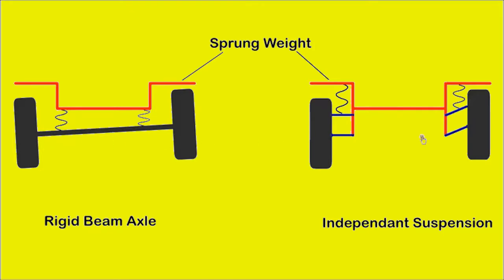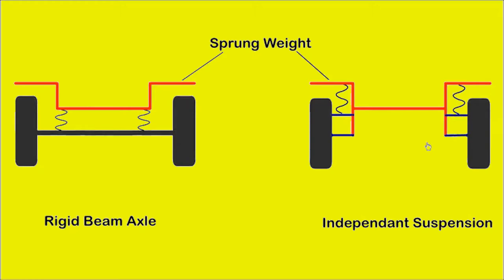With an independent suspension, each wheel is connected with its own linkage and its movement does not affect the other wheel. An independent suspension has less unsprung weight and allows the wheels to move independently of each other.